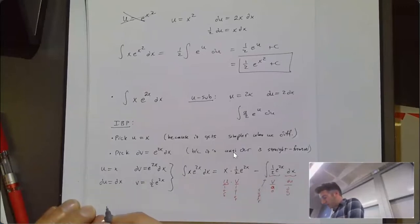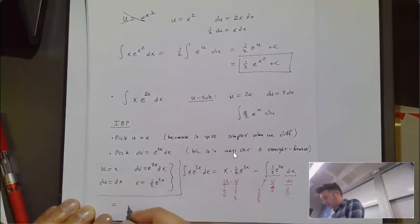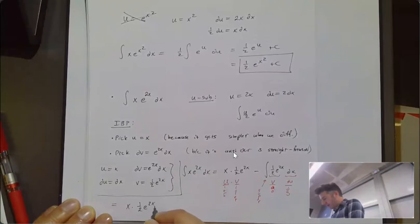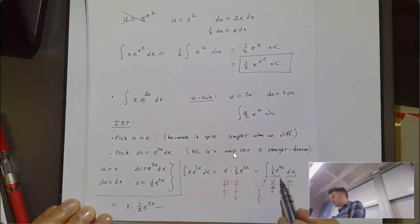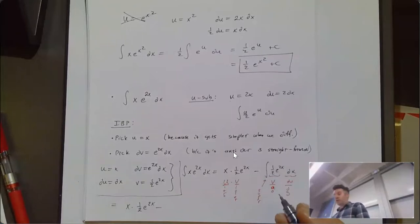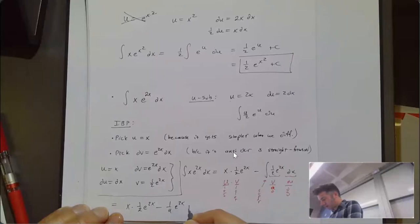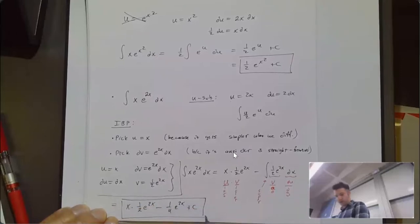This is going to end up equaling x times one-half·e^(2x) minus the integral of one-half·e^(2x) dx, which is one-half times another one-half·e^(2x), so it's one-fourth·e^(2x). And that's our result.